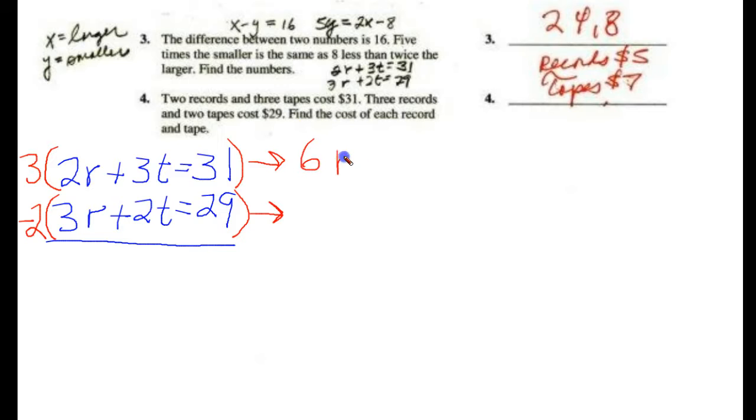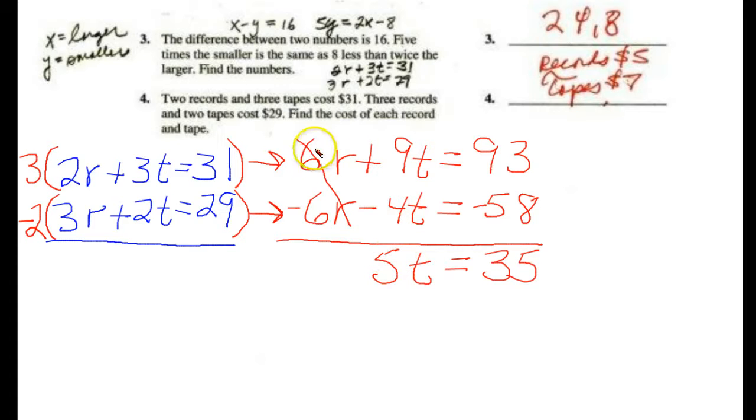So I'm suggesting the technique, then, is you're going to modify both these equations so that one of the letters cancel out. Now, 3 times 2r is 6r. 3 times 3t is 9t. And 3 times 31 is 93. All right. Now, a negative 2 times this is a negative 6r. A negative times this is a negative 4t. And a negative 2 times this is going to be a negative 58. Now you put your line. And you see, as you inspect it, and this is what we multiplied these equations by, so that this would occur, one of the letters are going to cancel out.